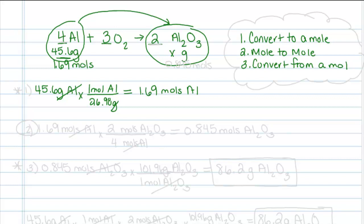But I don't want to know about aluminum. I want to know about aluminum oxide. So I am going to take that 1.69 moles of aluminum. That was step one. Now in step two, I am going to take that 1.69 moles of aluminum and convert from moles of aluminum to moles of aluminum oxide.